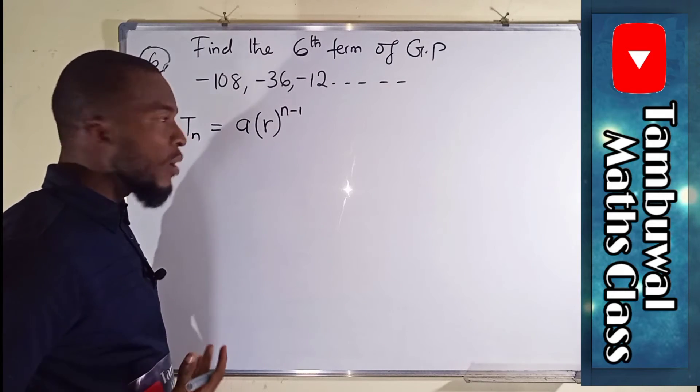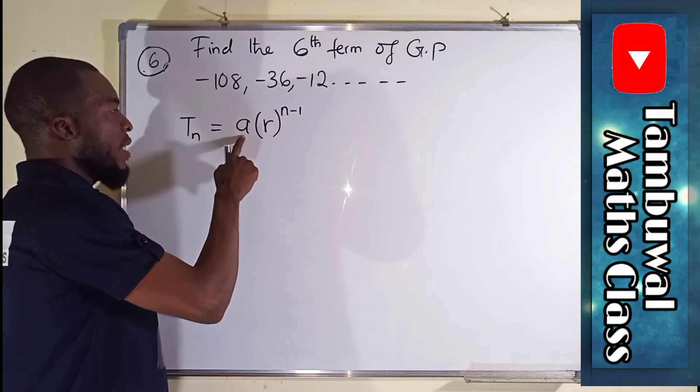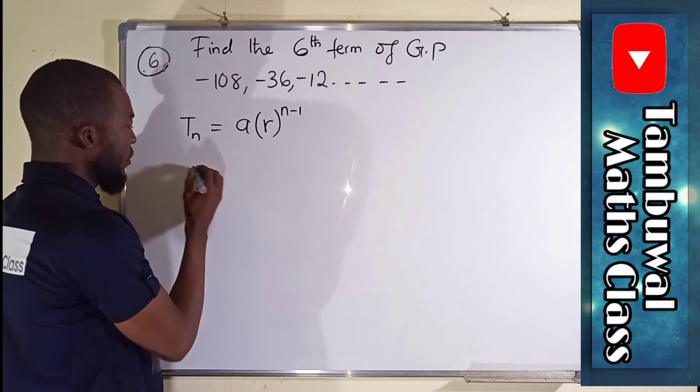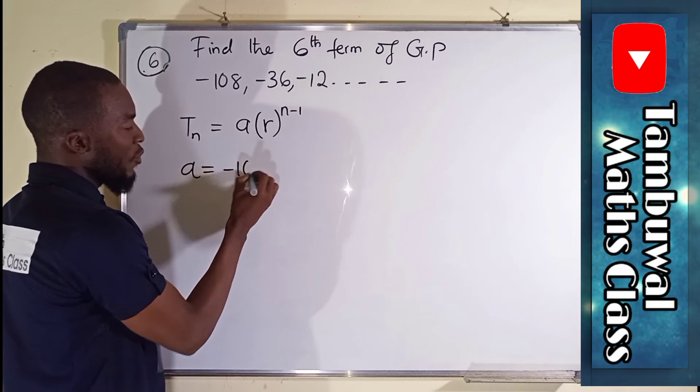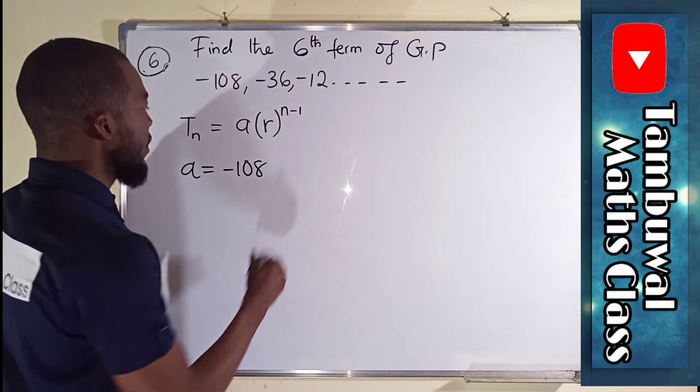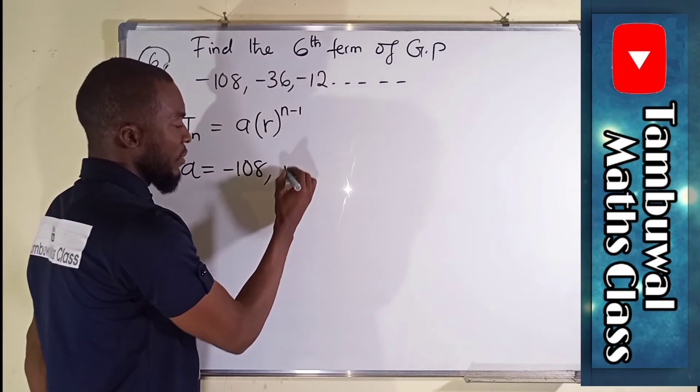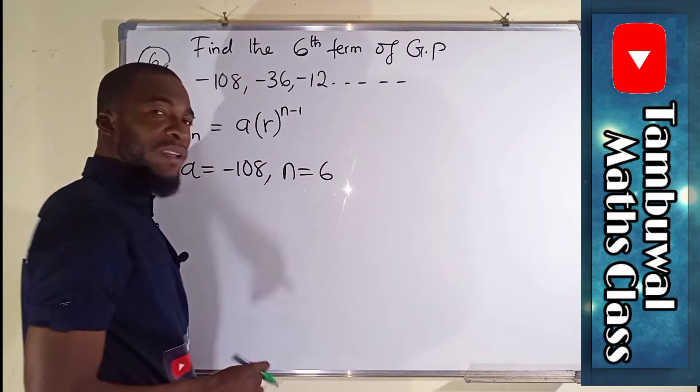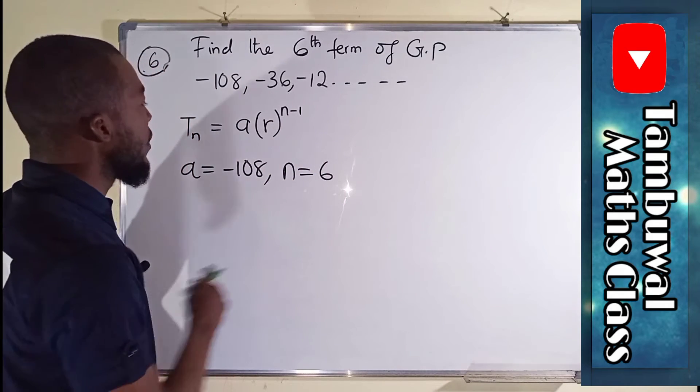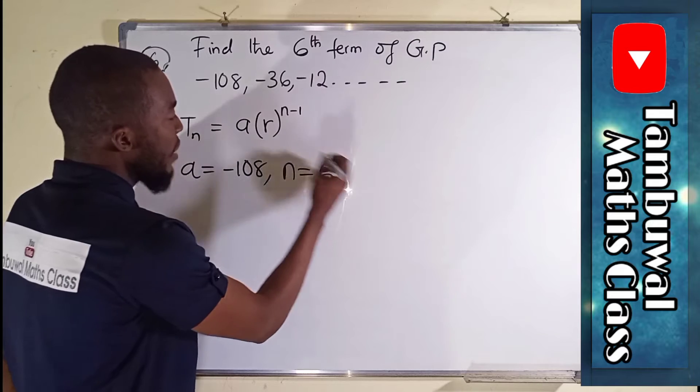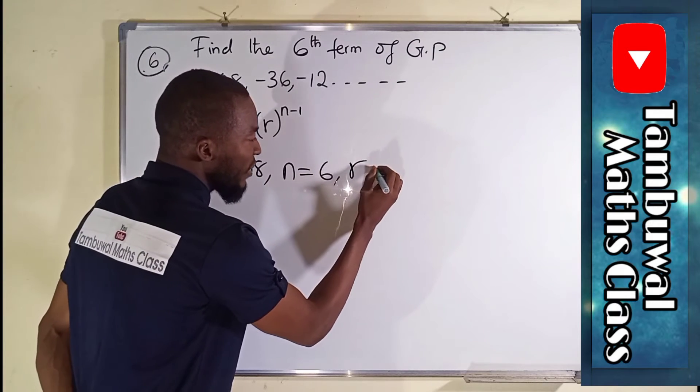Now let us bring down our data. A is always the first term, so we say A is equal to minus 108. N is what we are looking for, the sixth term. Number of term is 6 here. Our R is the common ratio. How do we obtain this common ratio?